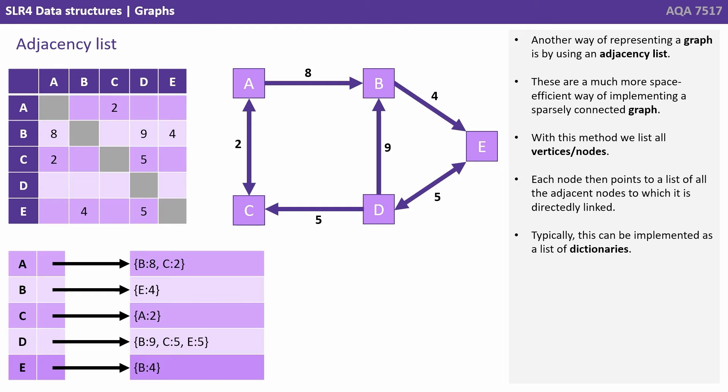Typically, this can be implemented as a list of dictionaries. When implemented like this, the dictionary keys represent the nodes, and the dictionary values represent the edge weights.